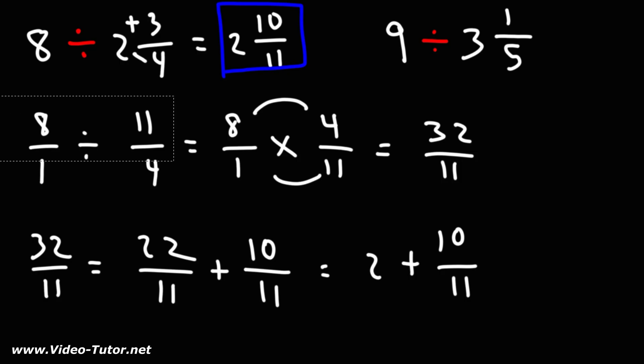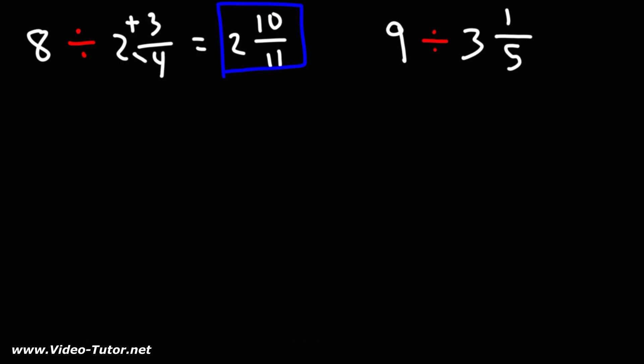Let's do the same thing for the second problem. We'll begin by writing the whole number as a fraction. Let's convert 3 and 1 fifth to an improper fraction. We can do that by rewriting the denominator. We'll multiply 3 and 5, which is 15, add 1. That's 16.